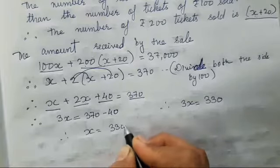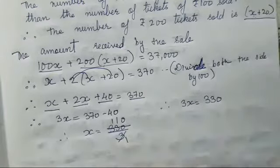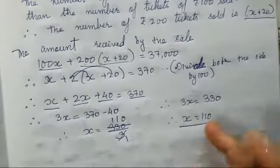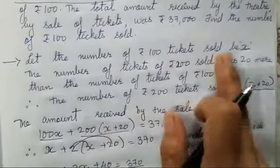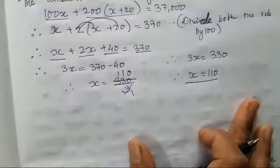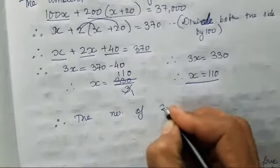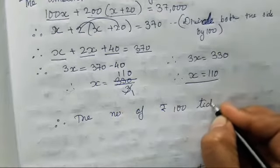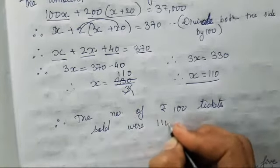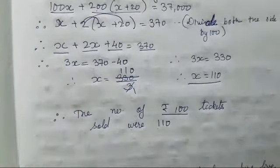Therefore x is equal to 330 upon 3, which equals 110. And we supposed x as 100 tickets sold. And what do we need? Find the number of 100 tickets sold. So the number of rupees 100 tickets sold were 110. I hope this question is clear to everyone.